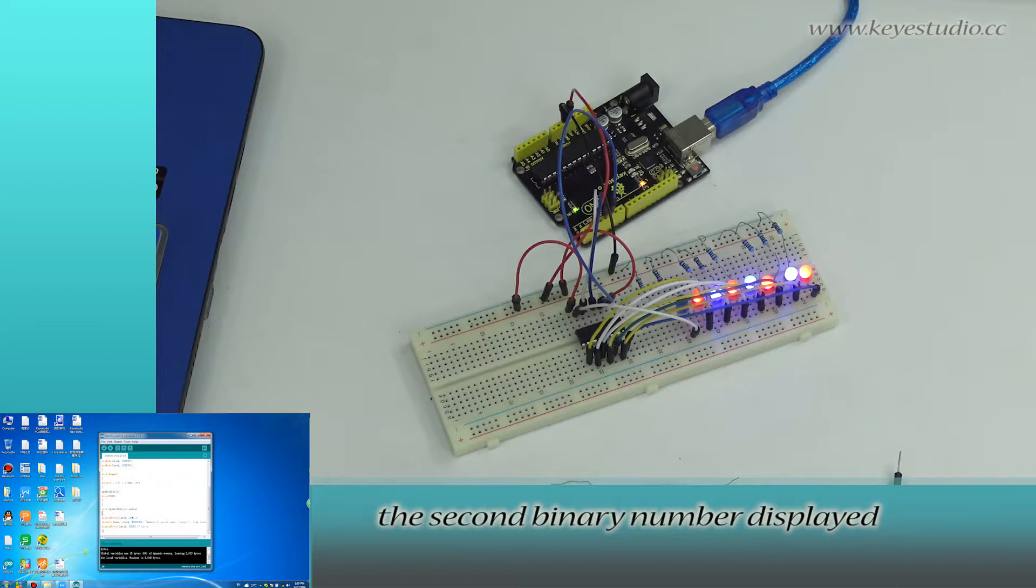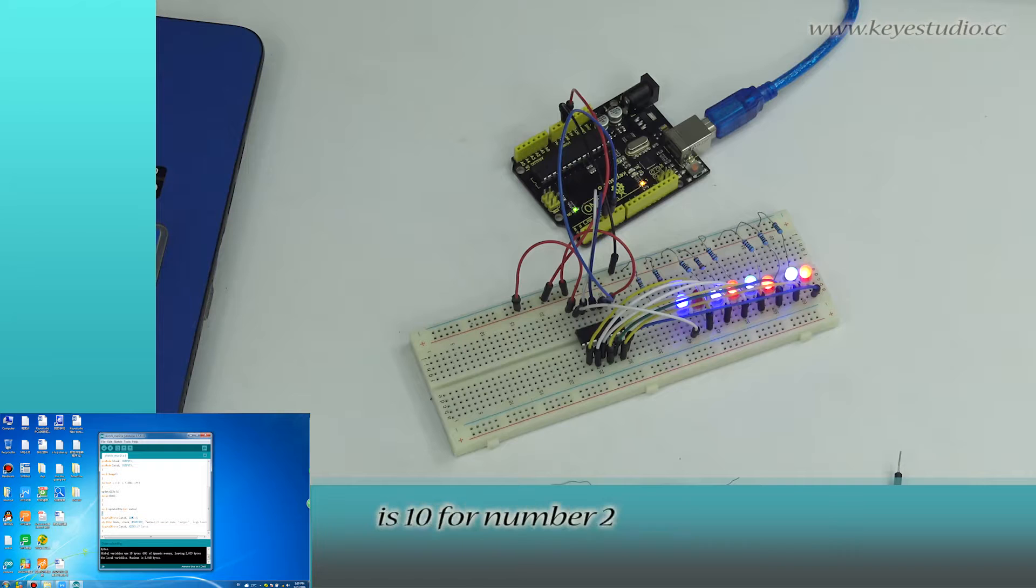The second binary number displayed is 1 for number 1. That is, LED 1 being off, the rest being on. So you get 1. The third binary number displayed is 10 for number 2. That is, LED 2 being off, the rest being on. So you get 10.